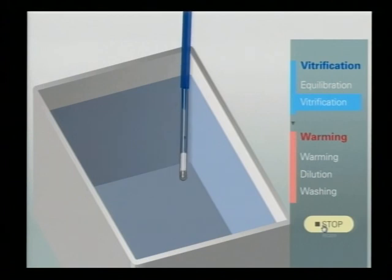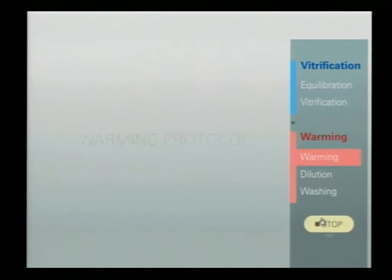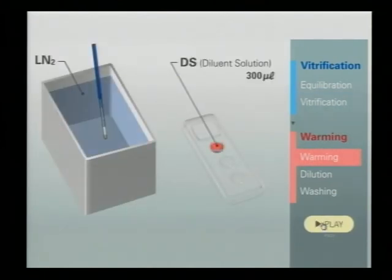This is vitrification. Okay, so for warming, it takes 10 minutes for it. The first is the preparation. So this is warming plate. Warming plate and the warming solution, just TS on the label, is stored in incubator at least three hours before the use. Because we use only warming solution at 37 degrees centigrade.